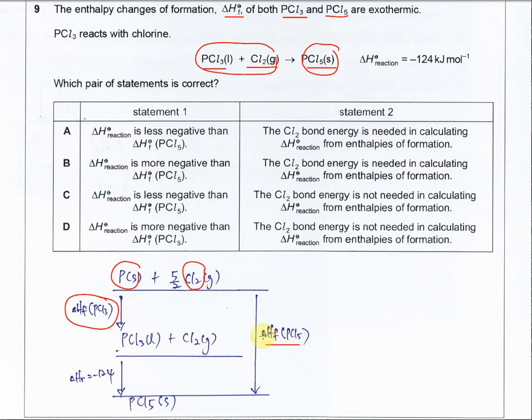From here, it's very clear that we know for the first statement, the Delta HR is less negative than Delta HF of PCL5. Okay, because here is just negative 124. This is more enthalpy. Value is greater. Right, it's more exothermic. That's why I said it just can be A or C.